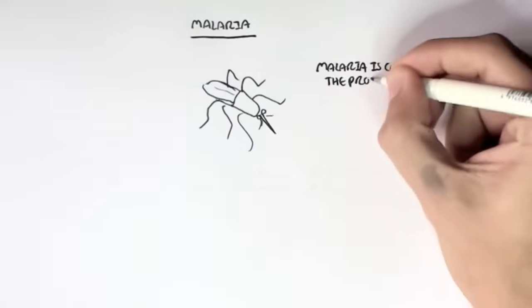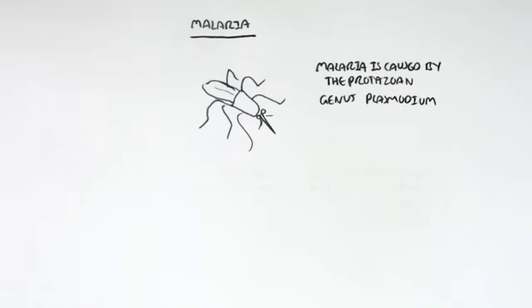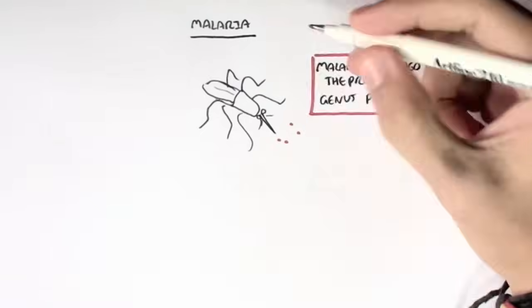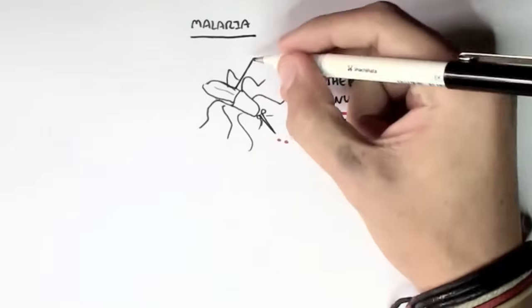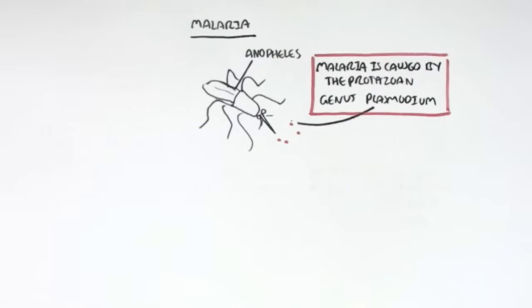Malaria is caused by the protozoan genus Plasmodium. So the mosquito, in this case, is specifically called Anopheles, from the Anopheles genus. And they carry the parasite Plasmodium.